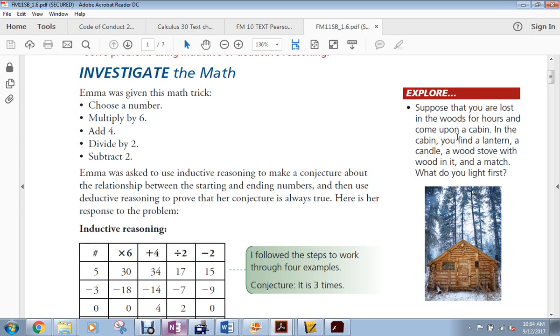It says, suppose that you are lost in the woods for hours and you came upon a cabin. In the cabin you find a lantern, a candle, a wood stove with wood in it and a match. What do you light first and why?